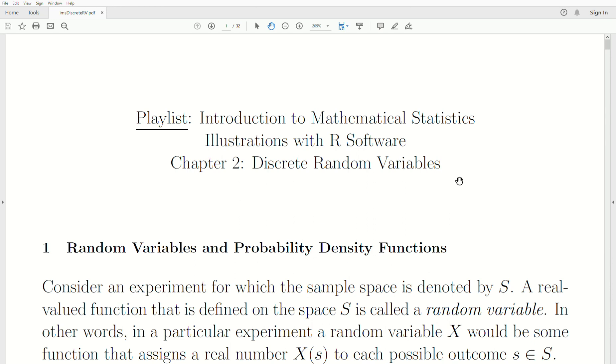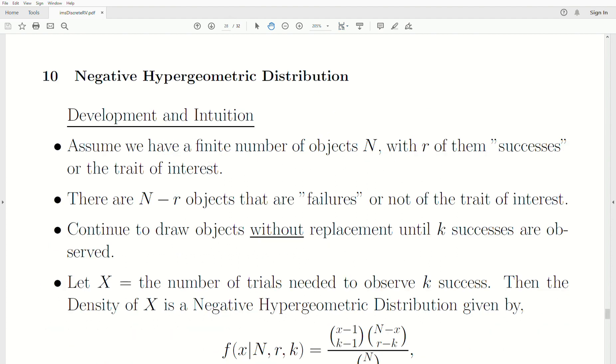Hello, this is the next video in a playlist called Introduction to Mathematical Statistics. We're in Chapter 2, Discrete Random Variables, and today's topic is the Negative Hypergeometric Distribution, which in my opinion is a very powerful undertaught discrete distribution.